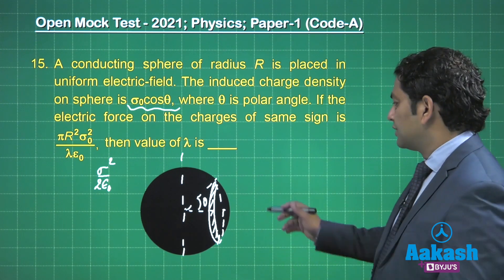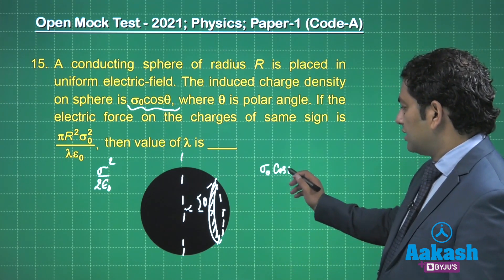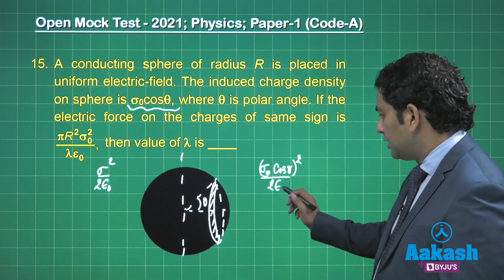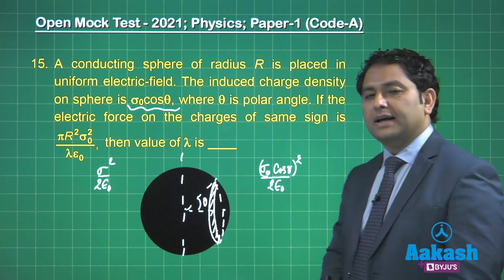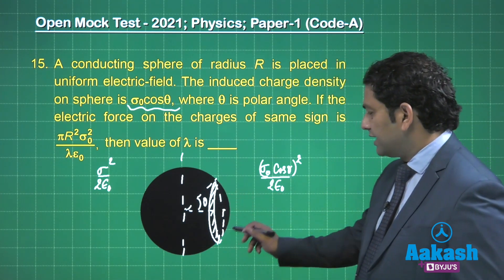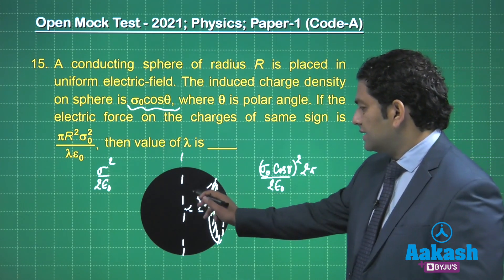How much would be the pressure there? (σ₀cosθ)²/2ε₀ - that's the pressure multiplied by the area, the area of this shaded ring. That's 2π, this is r, so the radius of the ring is going to be rsinθ into this thickness which is rdθ.